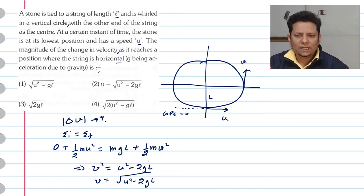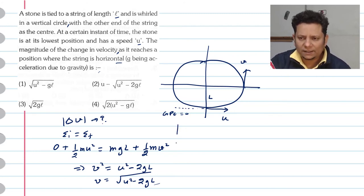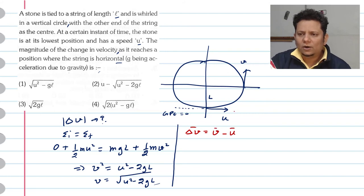This is not the final answer. This is the velocity here. The magnitude of delta V is what we need. Delta V will be equal to the final velocity minus the initial velocity. Because your velocities are in i-cap and j-cap directions, the change in velocity magnitude is the magnitude of delta V.